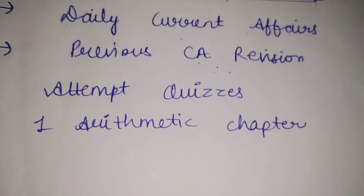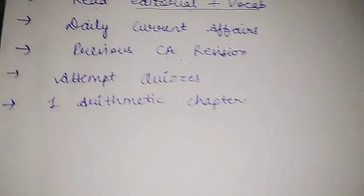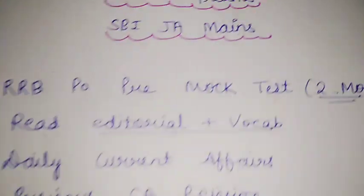Then there is one arithmetic chapter, because arithmetic also comes in the RRB PO Mains, so try to cover one arithmetic chapter also.